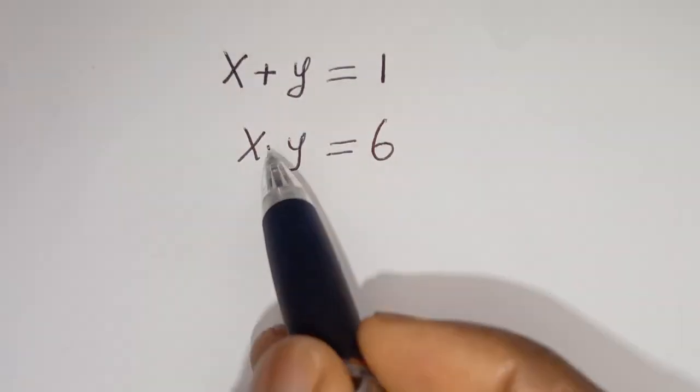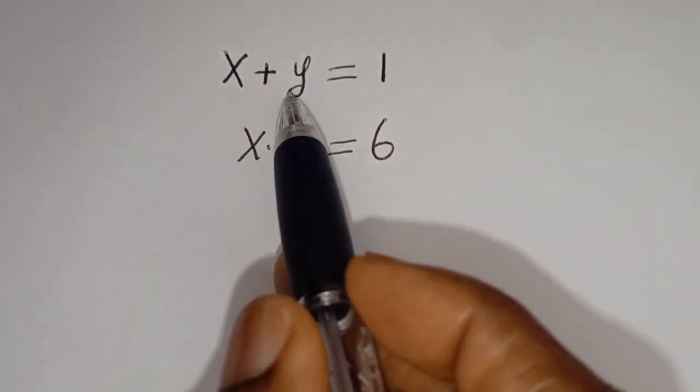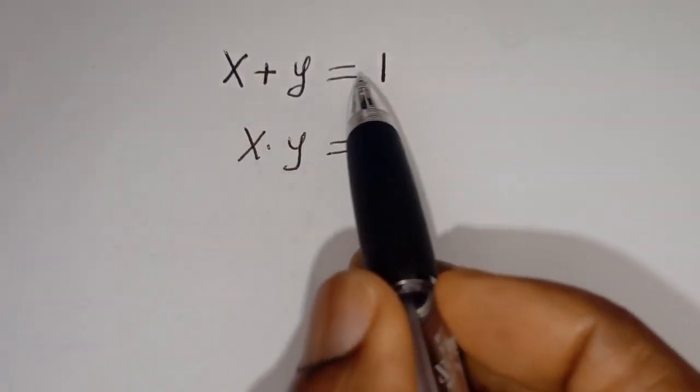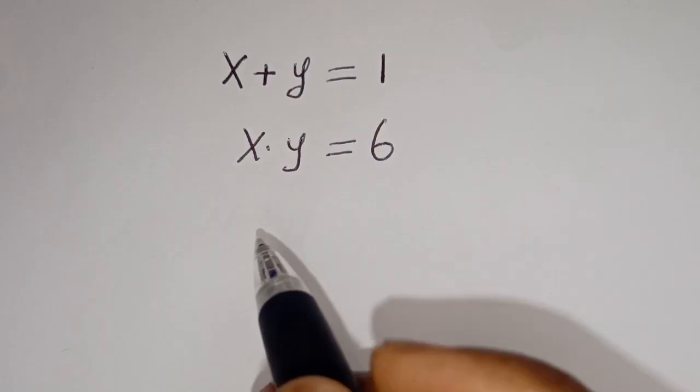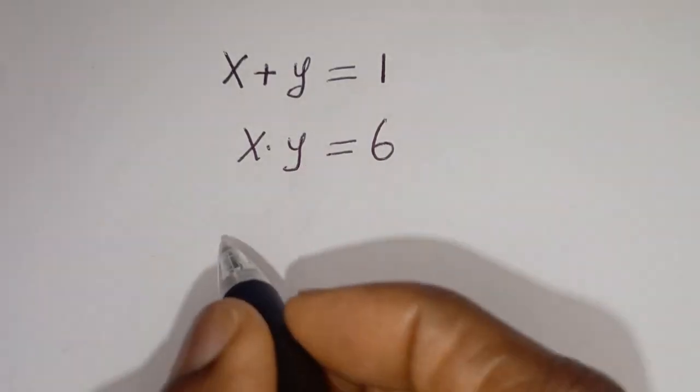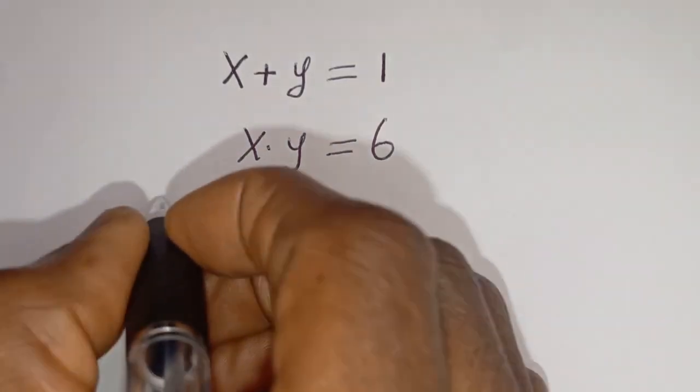Hello. How to solve for x and y in this equation: x plus y is equal to 1, x times y is equal to 6. Solution.